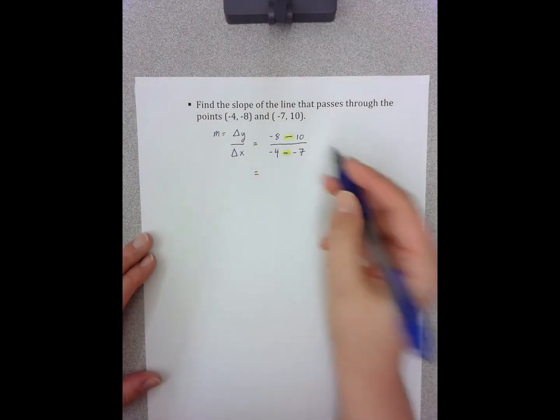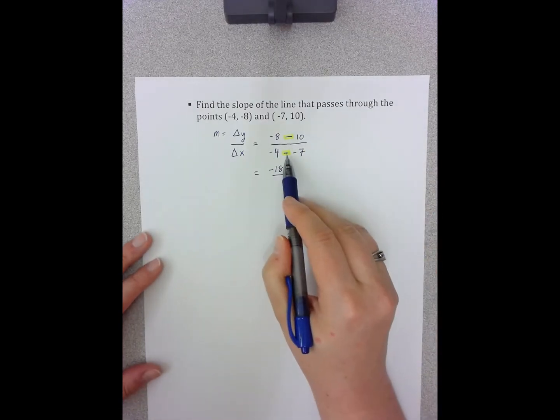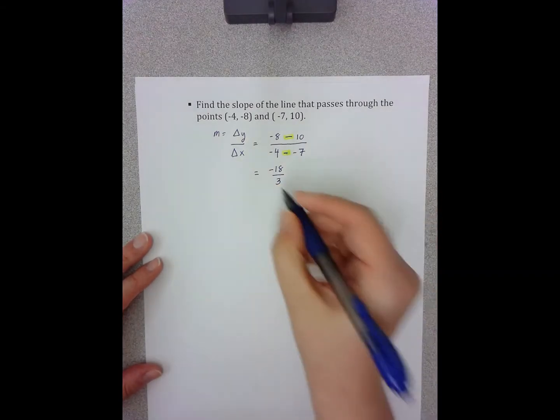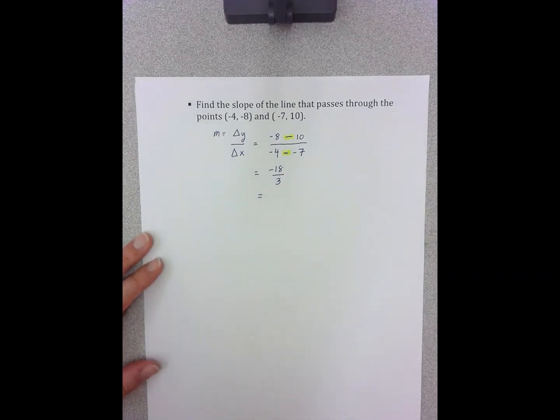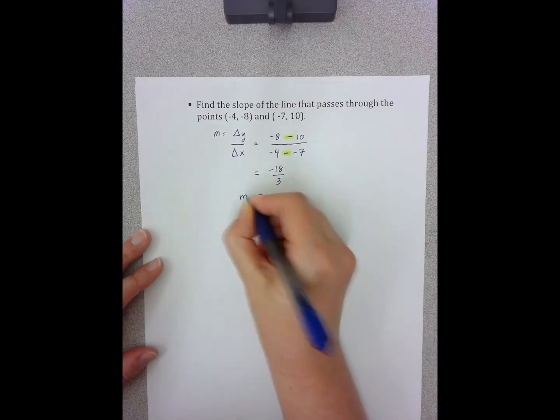I'm going to simplify this. Negative 8 minus 10 is negative 18. Negative 4 minus negative 7 is a positive 3. And in this case, this can actually be simplified further. So I can divide 18 and 3 by 3, and so I end up with negative 6.